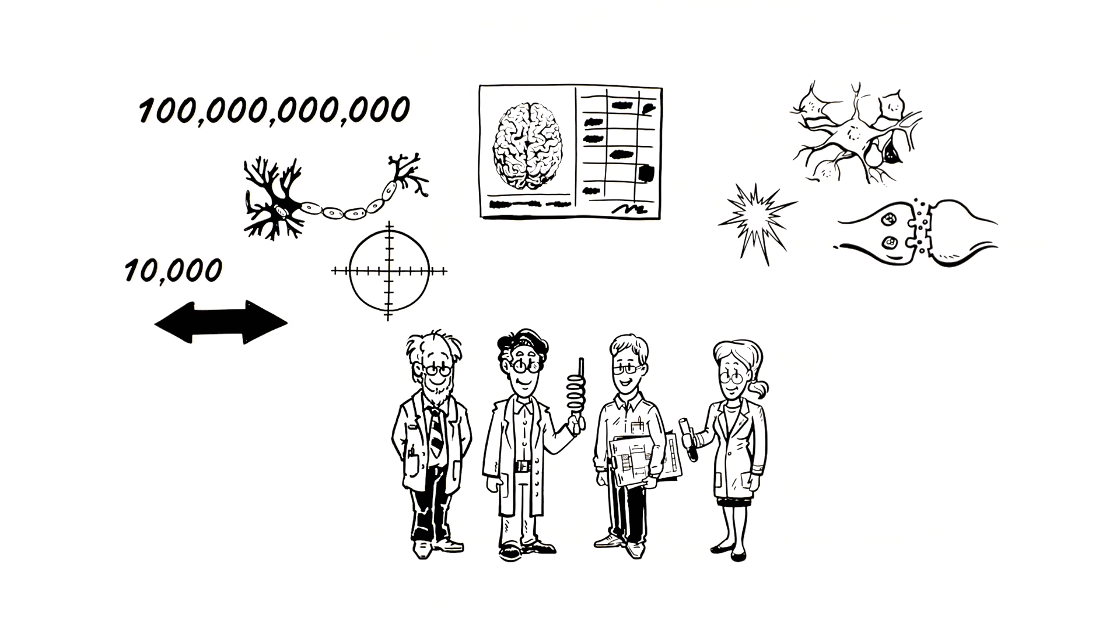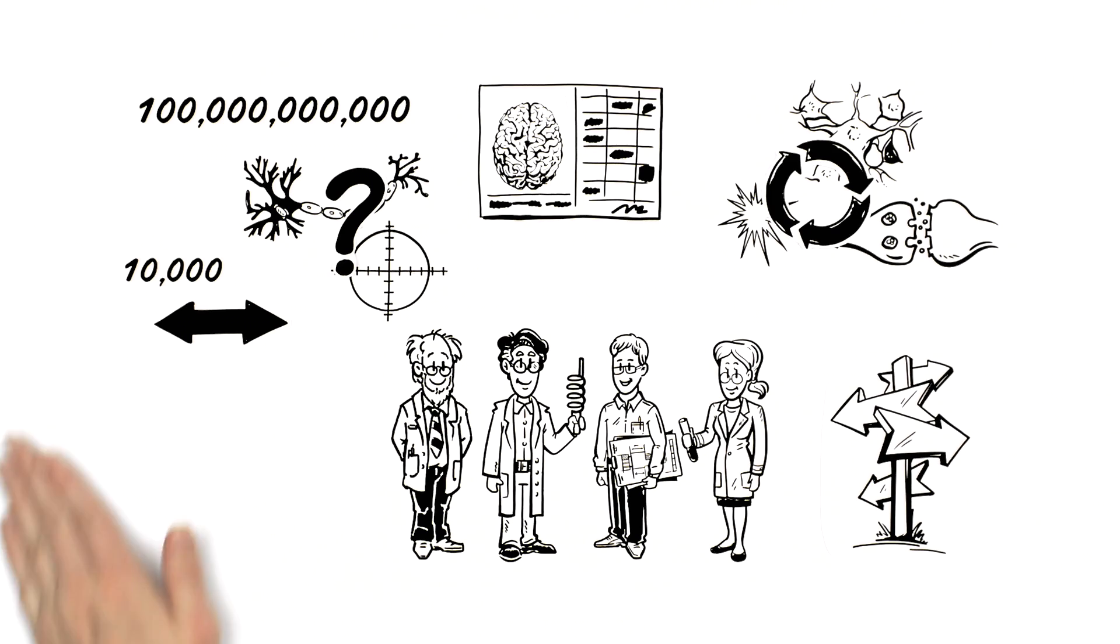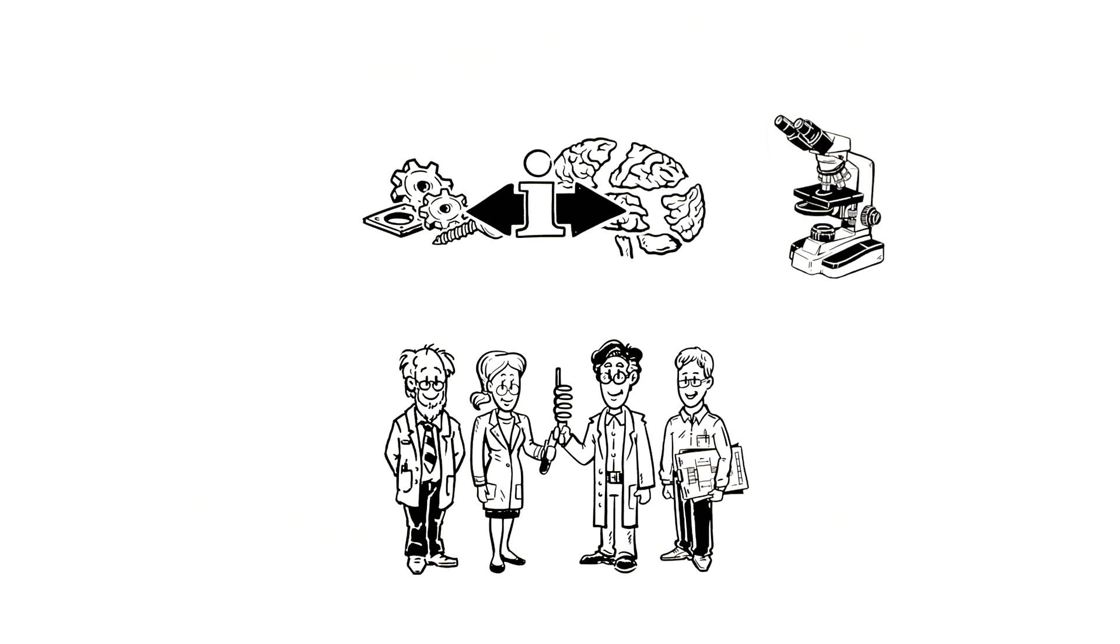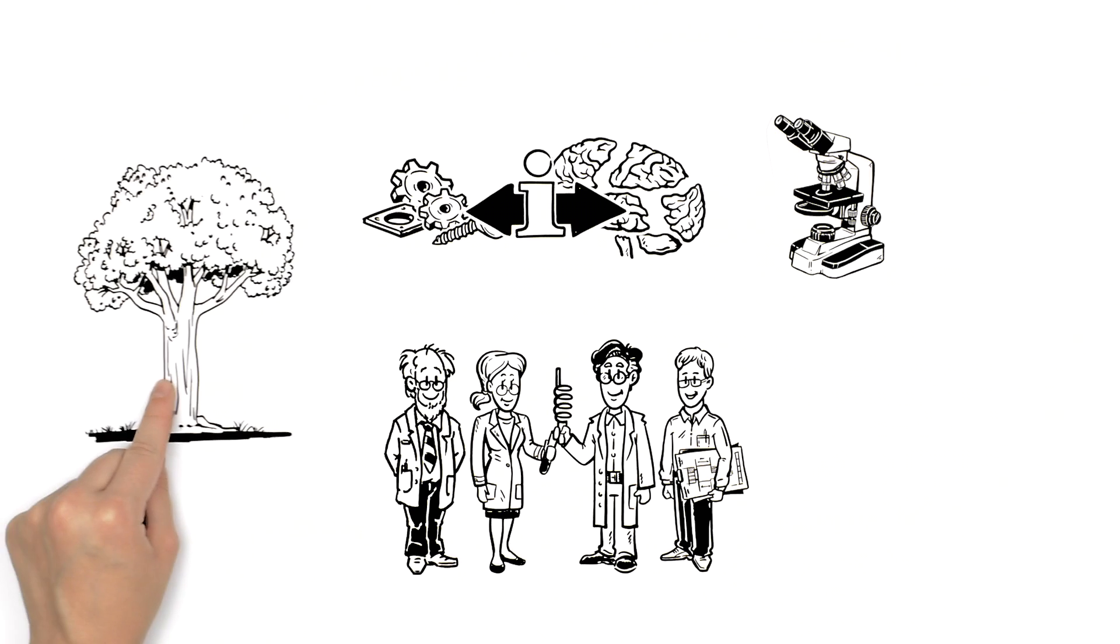They are identifying what makes one neuron different from another and looking at how signals travel and impact each other. Institute scientists are also examining how these parts or components process information received from the environment around us.